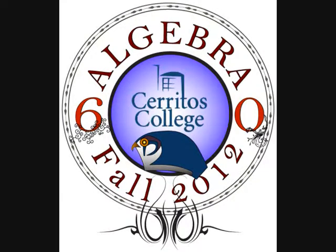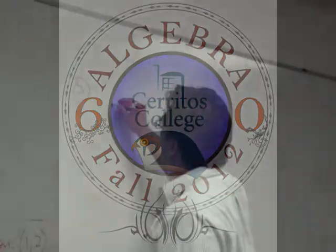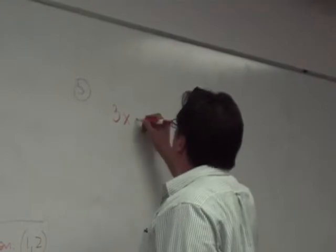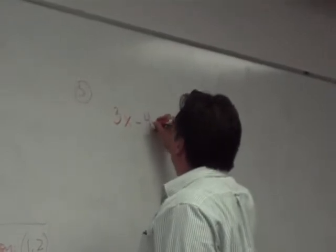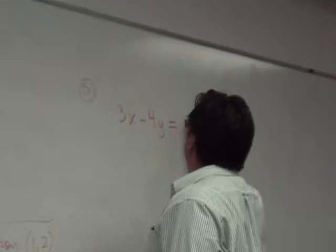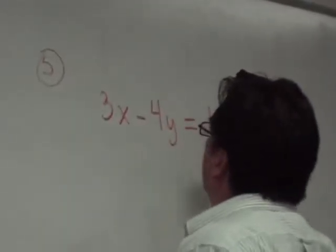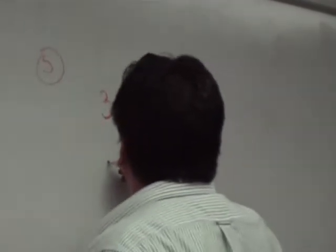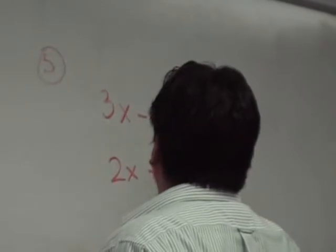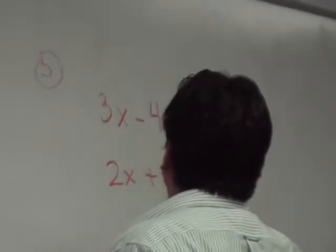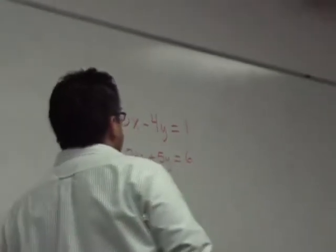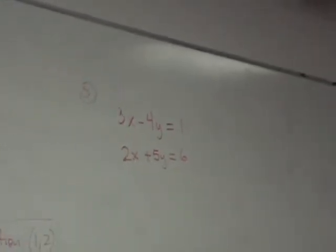Here's an example: 3x minus 4y is equal to 1, and 2x plus 5y is equal to 6. Let's say that I gave you these two equations.